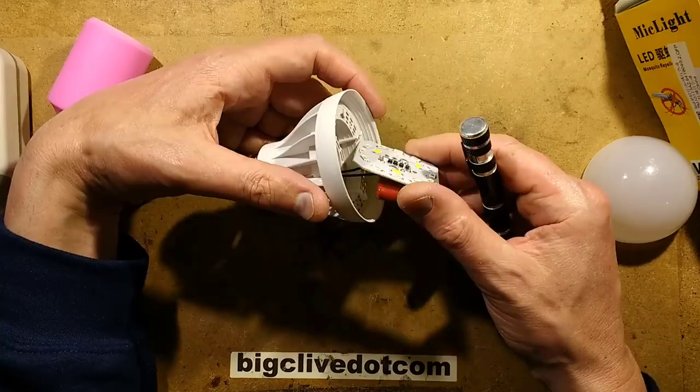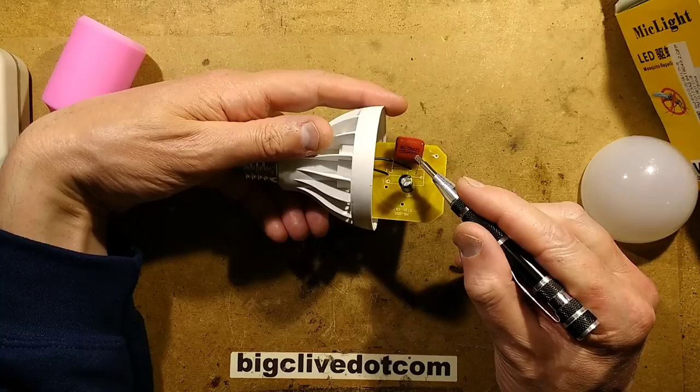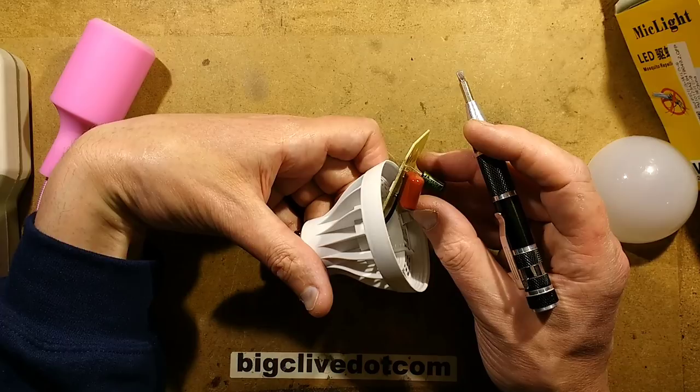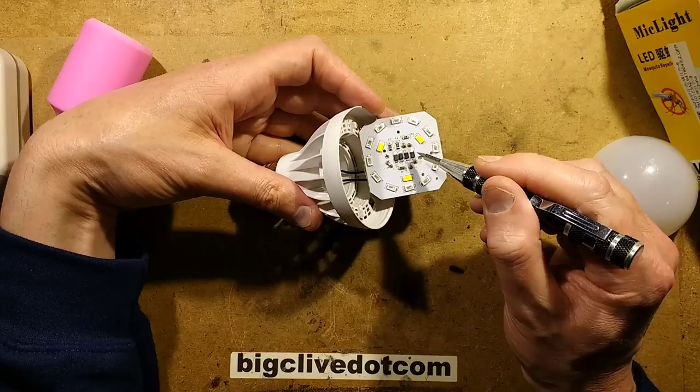In this case the capacitor has a value of 1.2 microfarad, which is lower than I was expecting. That is however very similar to the Poundland 6-watt LED lamp. It's a 400 volt capacitor. This electrolytic is 250 volt, 6.8 microfarad. That's the same as the Poundland 6-watt lamp, both those component values. And the rest of this construction is absolutely typical of this type of lamp, except for the fact that it's got, instead of just the outer ring of LEDs, it's got these extra ones.